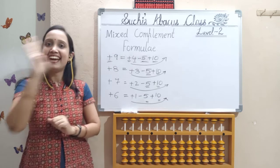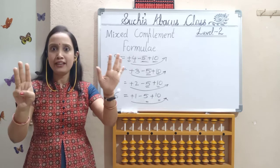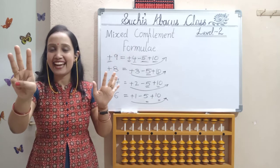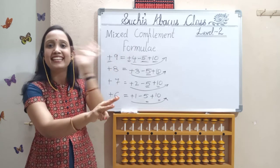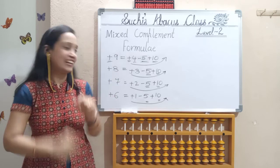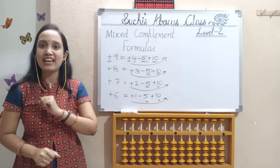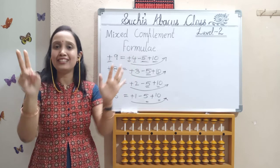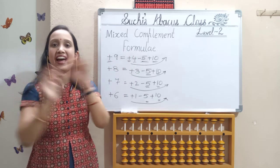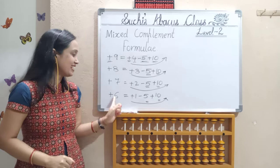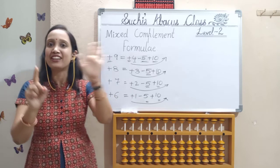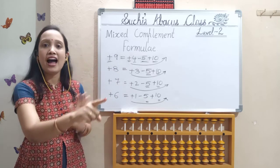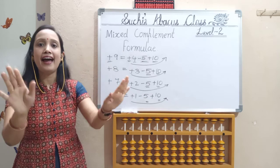Next, add 7. Open 7 — left hand 5, right hand 2. So: add 2, less 5, add 10. Next, add 6. Open 6 fingers — 5 and 1 is 6. So: add 1, less 5, add 10.